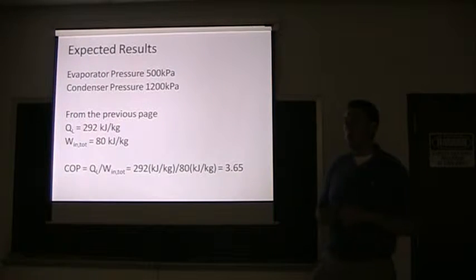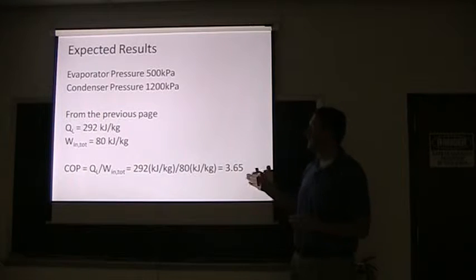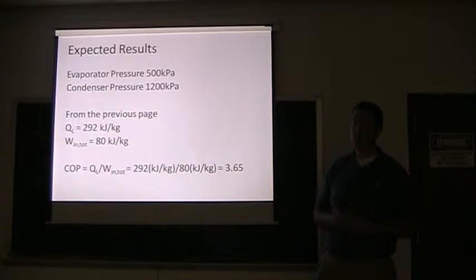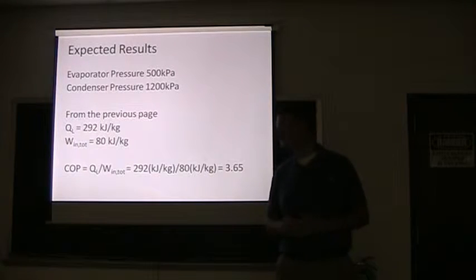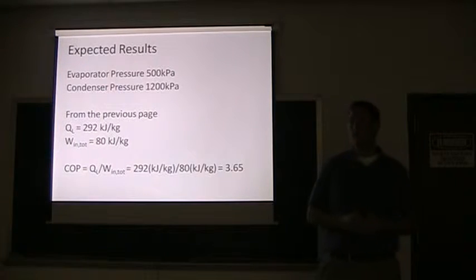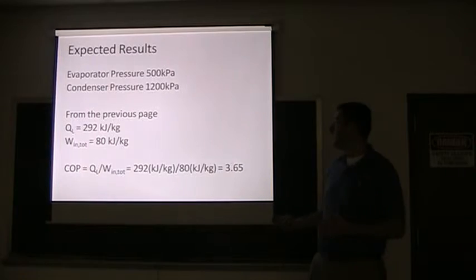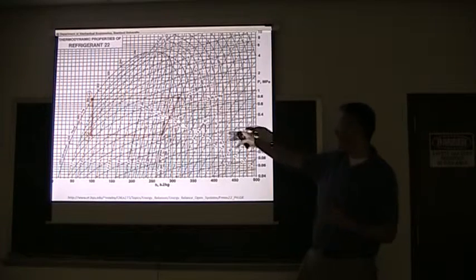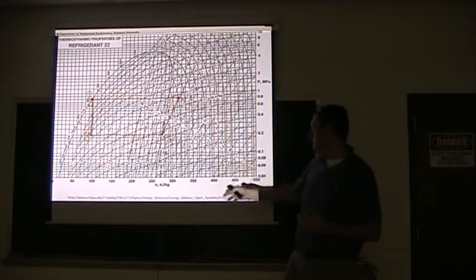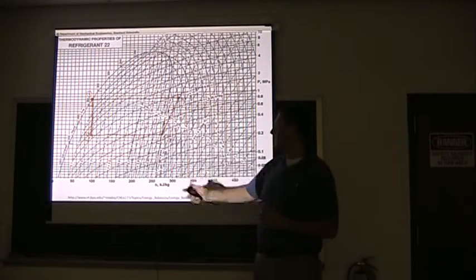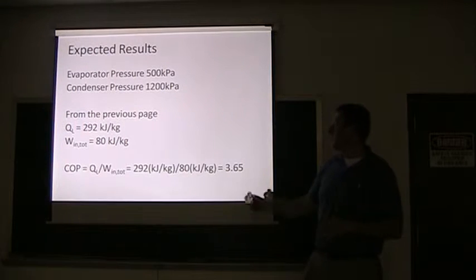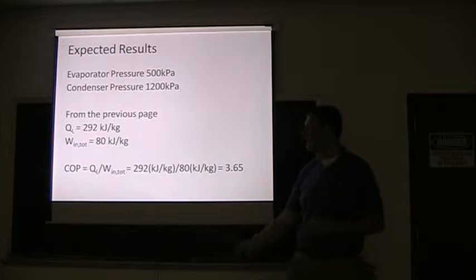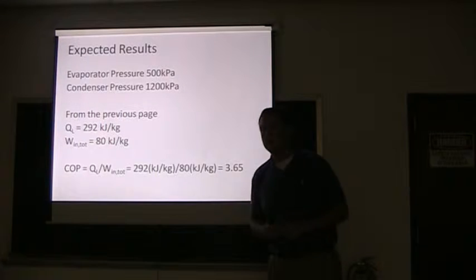Given an example of the evaporator pressure at 500 kilopascals and the condenser pressure at 1200 kilopascals. Going back to that previous table, we can read it off on this side - this is the megapascals. We go over and read the saturated vapor, saturated liquid line. We can find that our QL is going to be about 292 kilojoules per kilogram, and our WN will be about 80 kilojoules per kilogram.